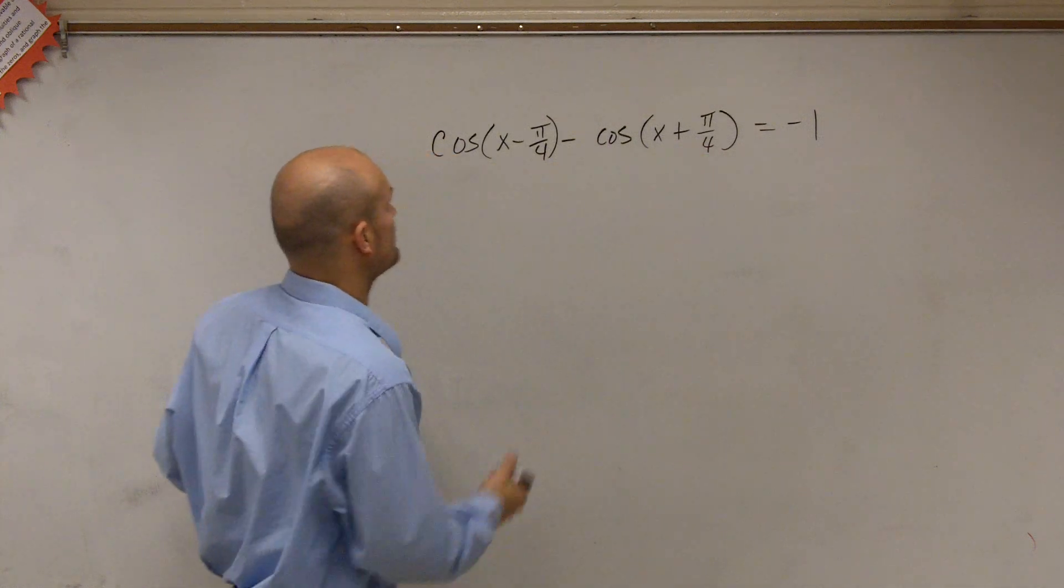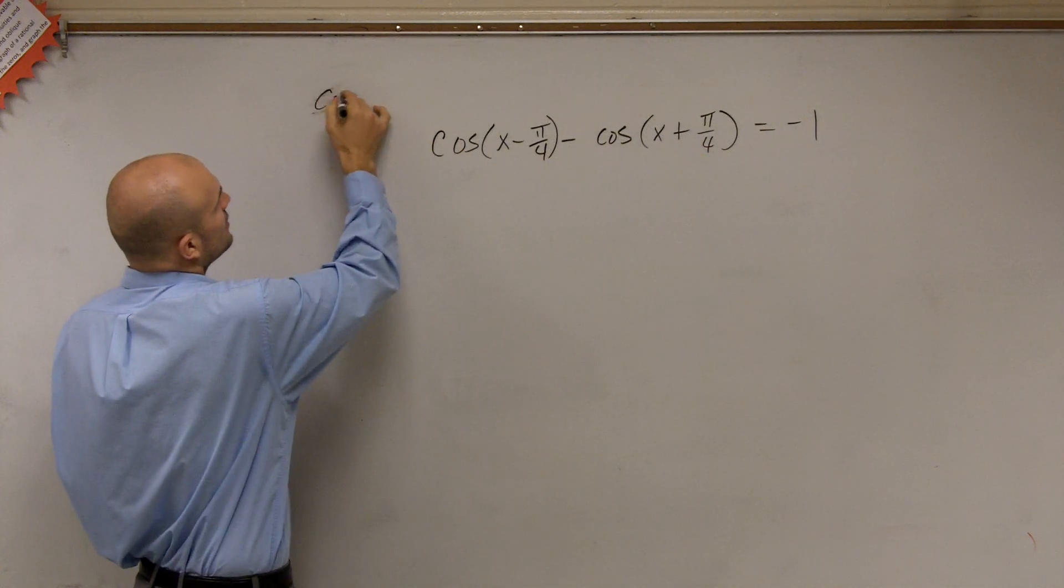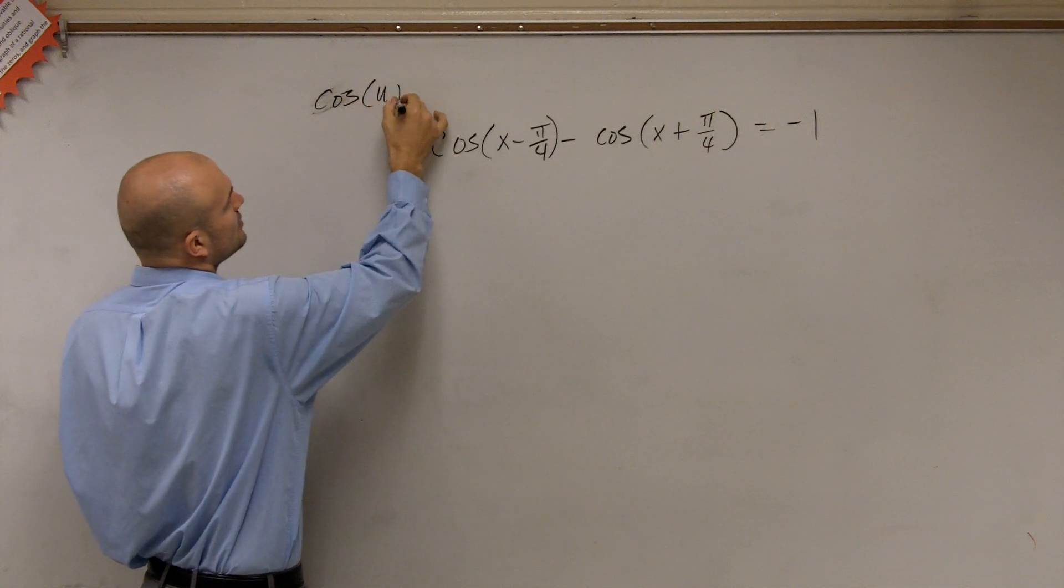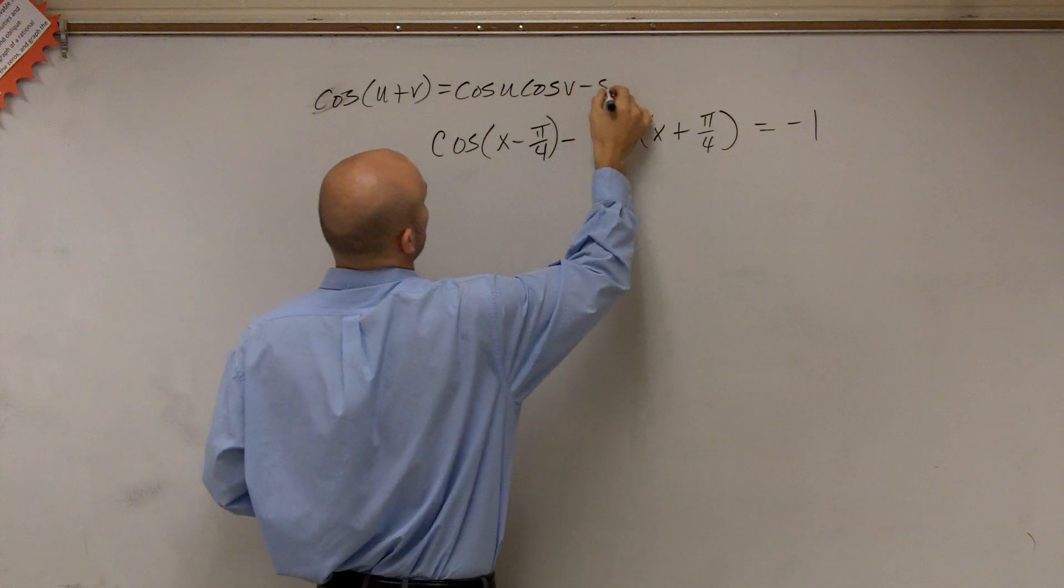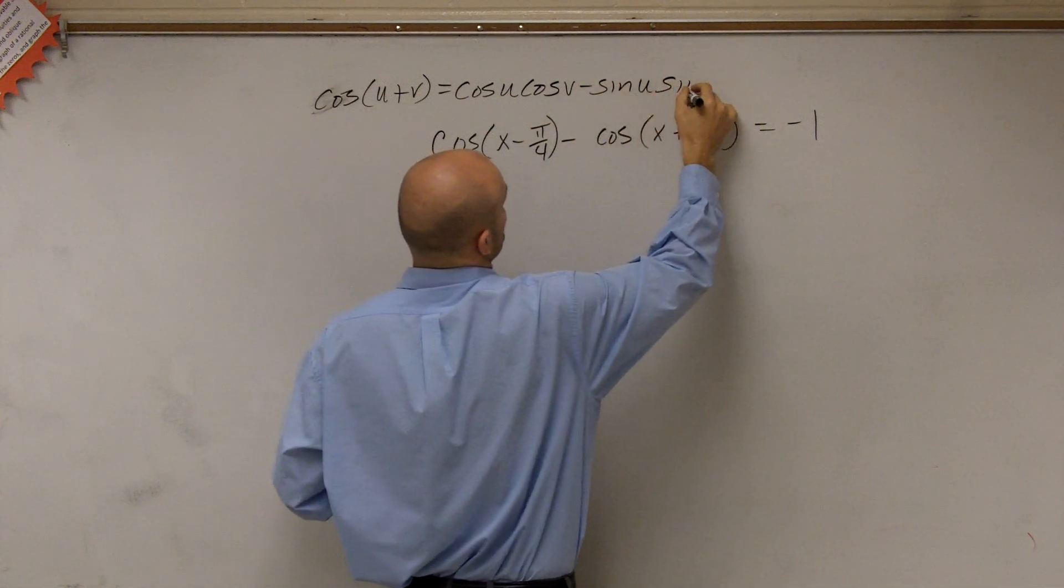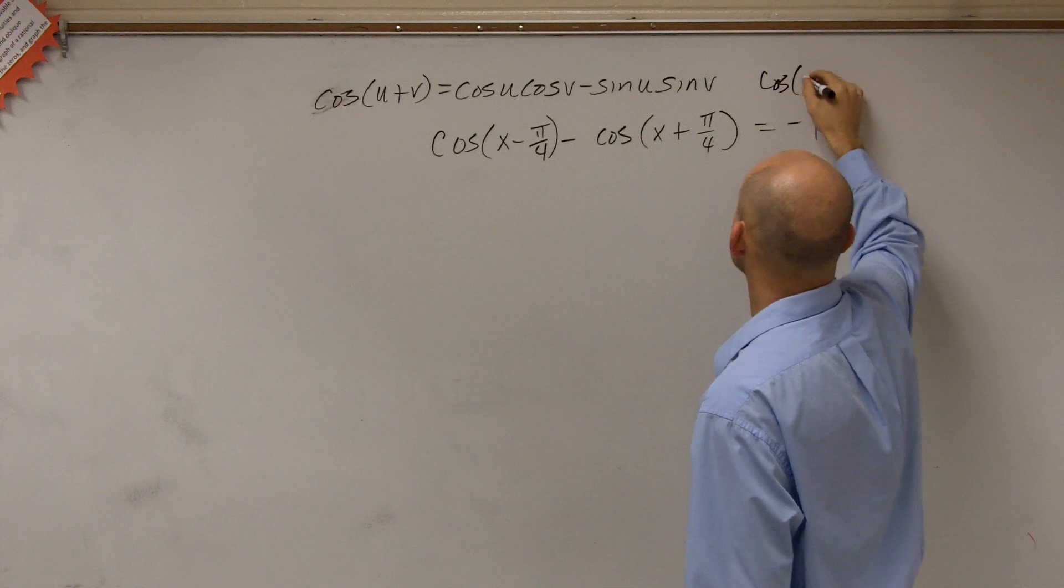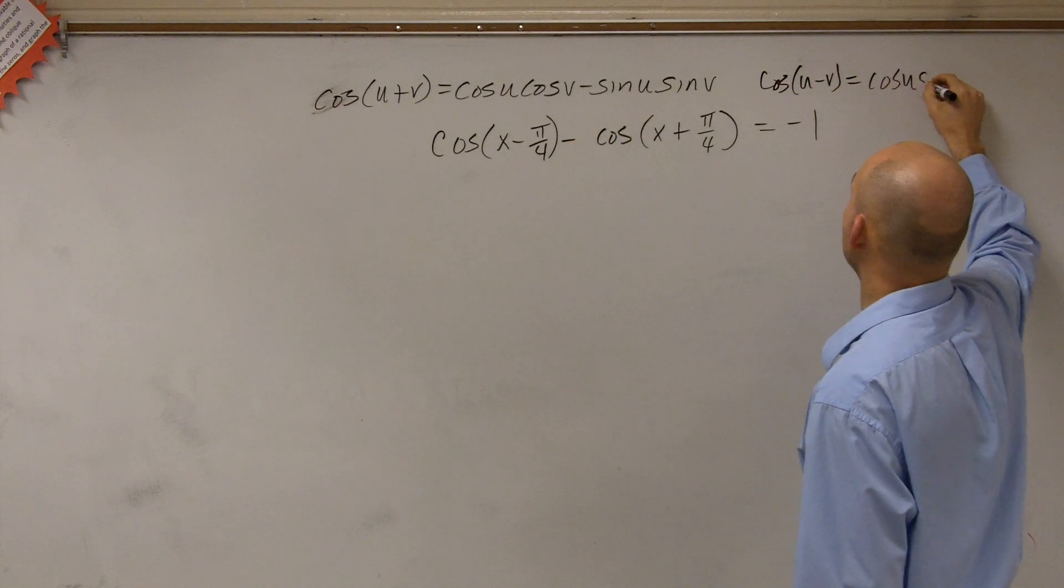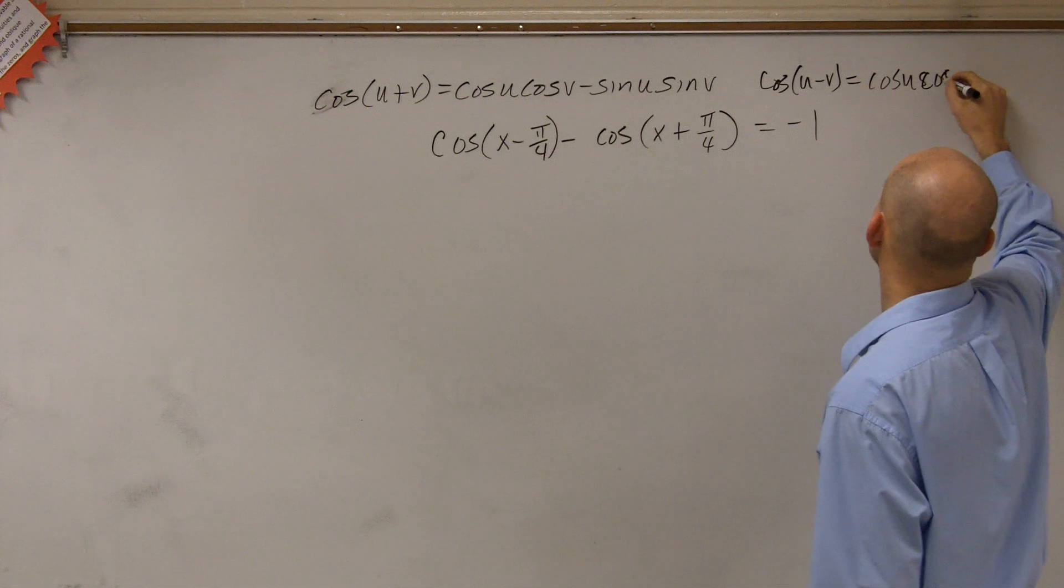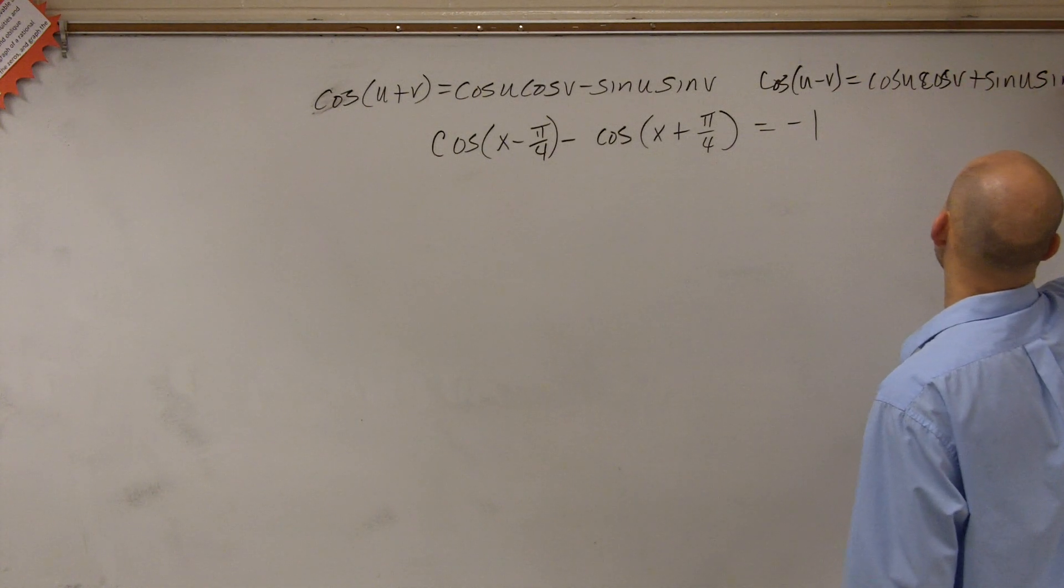So there's two formulas that we need to remember. First one is the cosine, since we're dealing with cosine. The sum of two angles for the cosine is going to be cosine of u times cosine of v minus sine of u times sine of v. And then the difference of two angles of cosine is going to be very similar, but it's going to be cosine of u times cosine of v plus sine of u times sine of v.